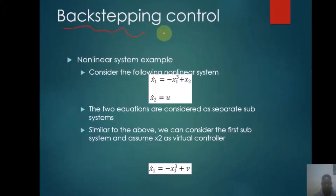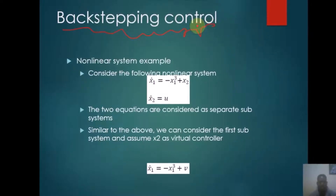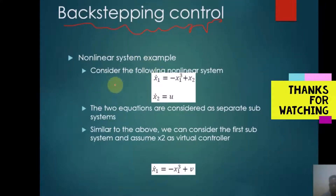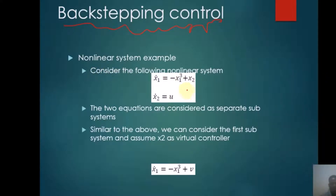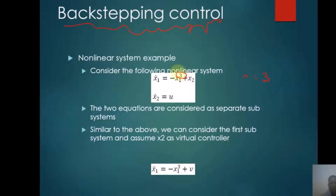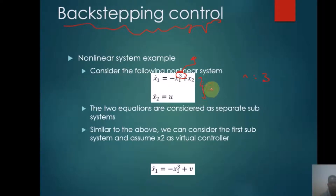Here in backstepping control, as we can see from the last class, there is an example. This first example is similar to the previous one, but there is one term that makes the system nonlinear, which is a higher-order term. We have an N factor where the power N is 3. This 3 makes the system nonlinear, and it is also an unstable system. We have states X1 and X2, and this is a second-order system.